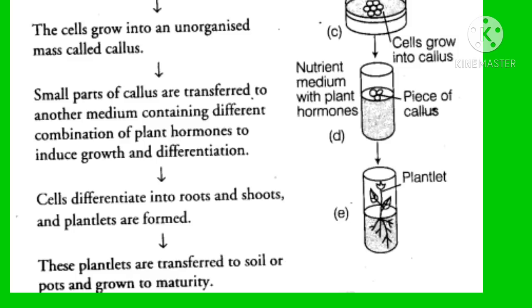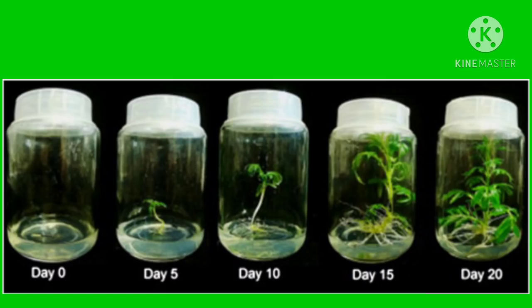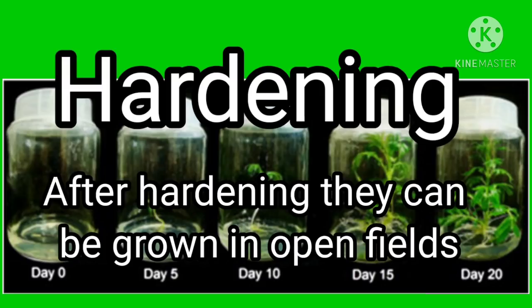This step is subculturing. Under hormonal influence, the cells differentiate into roots and shoots and plantlets are formed. These plantlets are transferred to soil or pods and grown to maturity in a natural environment.